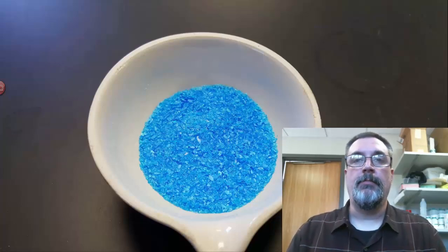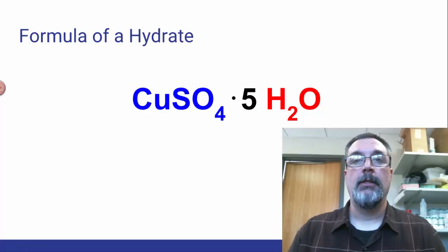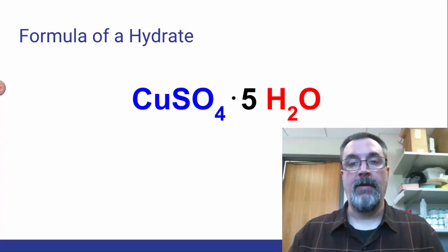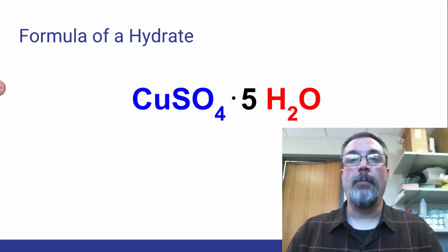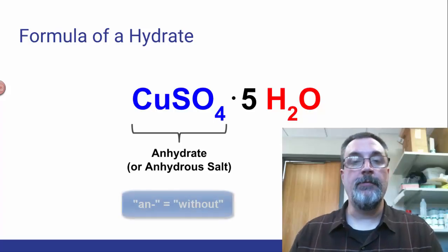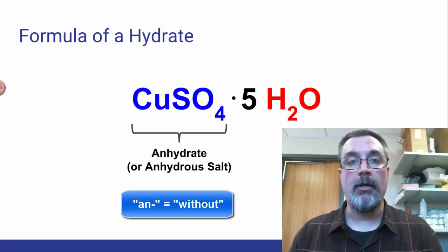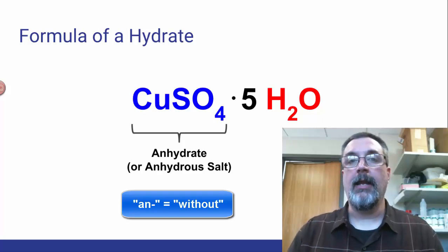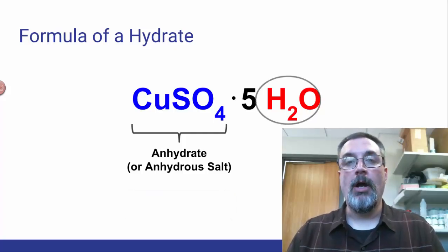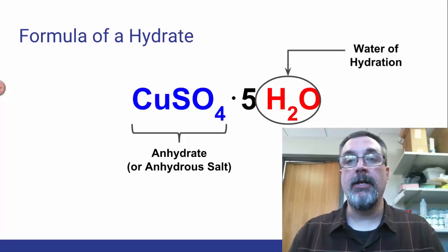We can indicate this by writing the formula a little differently. The formula for copper sulfate pentahydrate is written CuSO4, and then a dot, and then 5H2O. The CuSO4 part is called the anhydrate. 'An' as a prefix means without, so anhydrate means without water — sometimes it's called the anhydrous salt. That's the ionic compound part, the salt part. The water part at the end, after the dot, is the water of hydration.